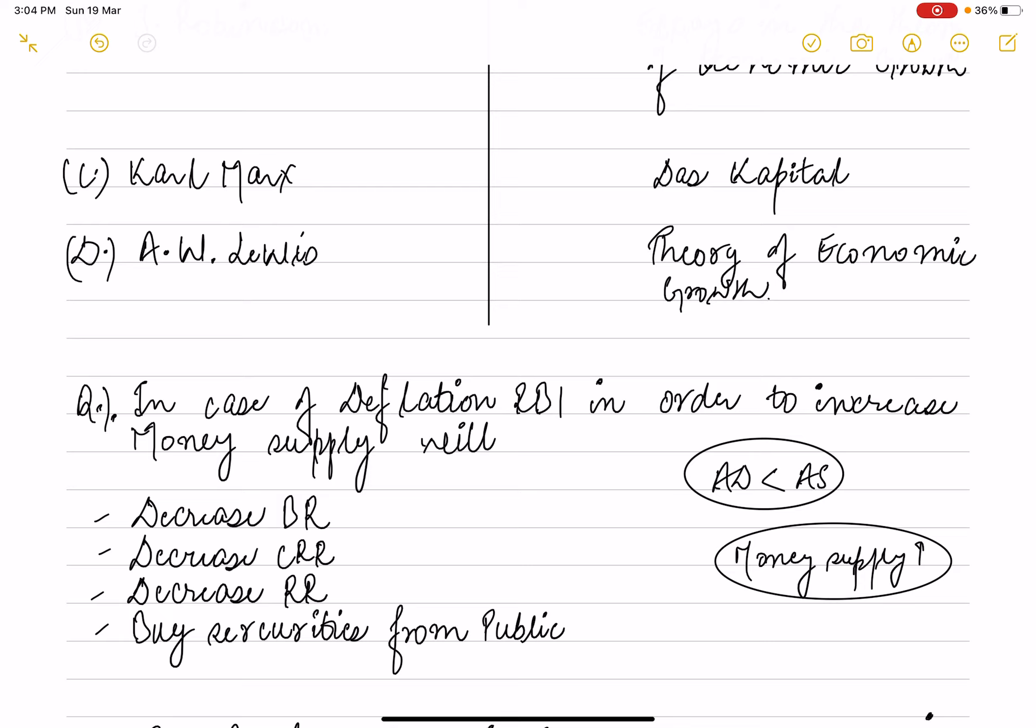So in the case of deflation, what will happen? They can buy securities from public. If RBI buys securities from public, then money supply will increase. So this is how in case of deflation money supply will increase. These are the few ways in which money supply can increase.